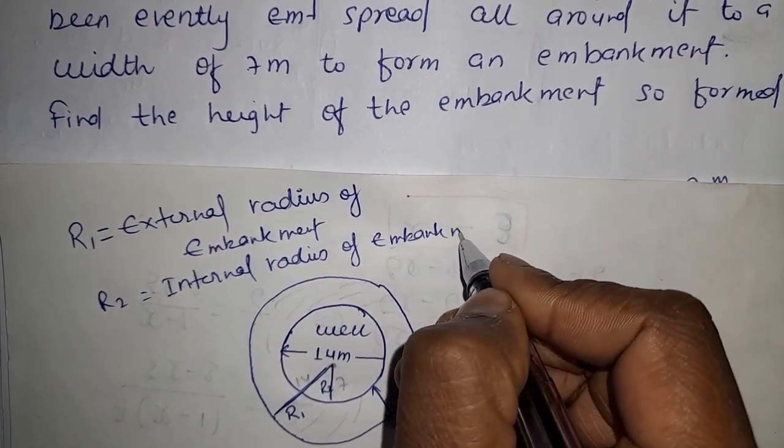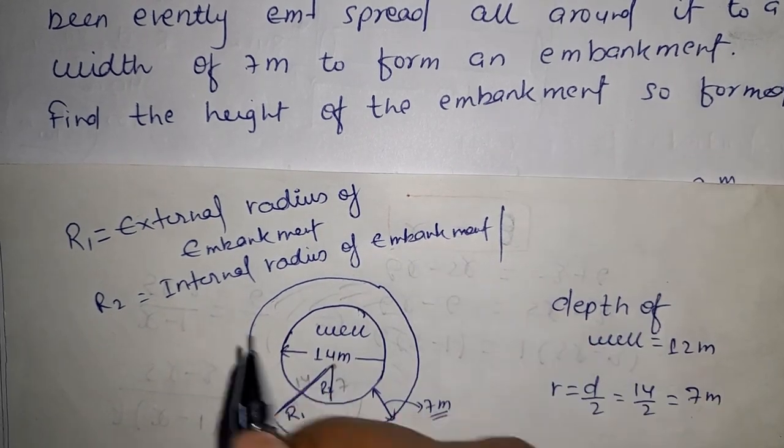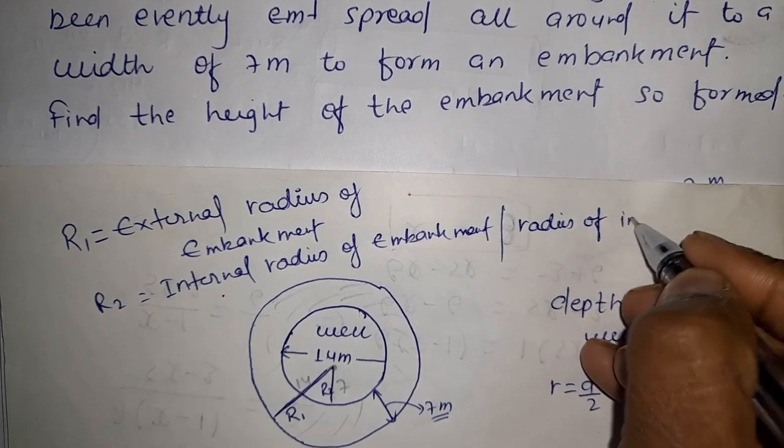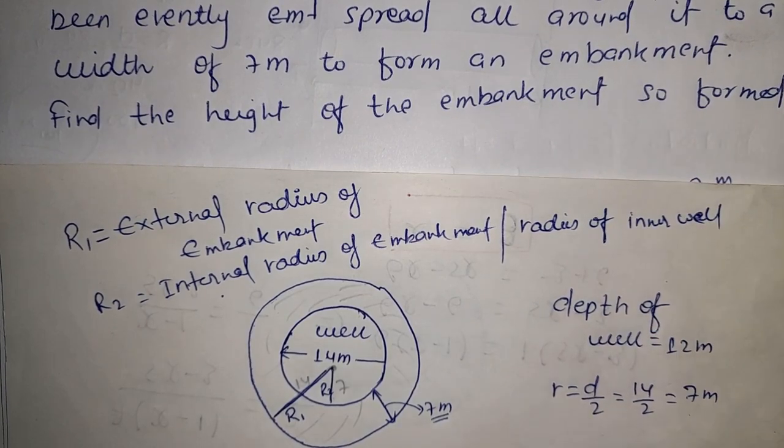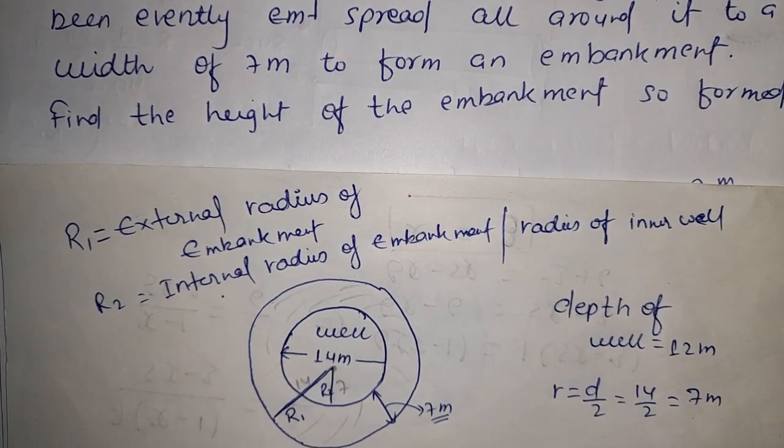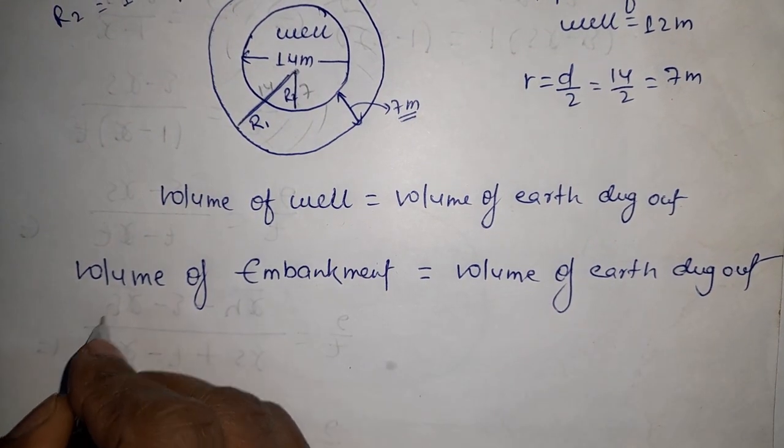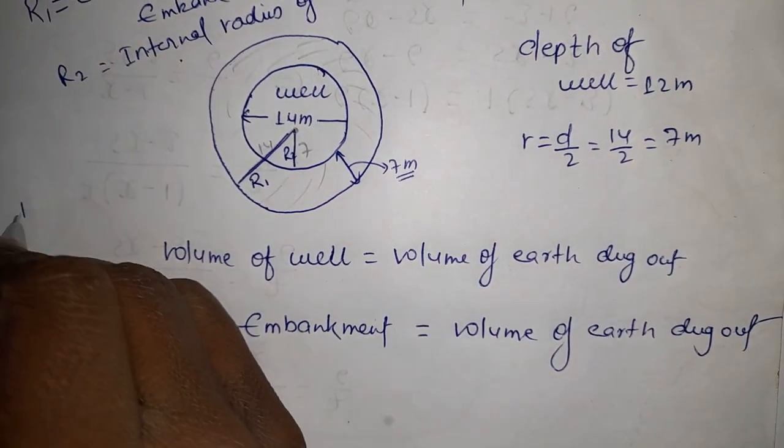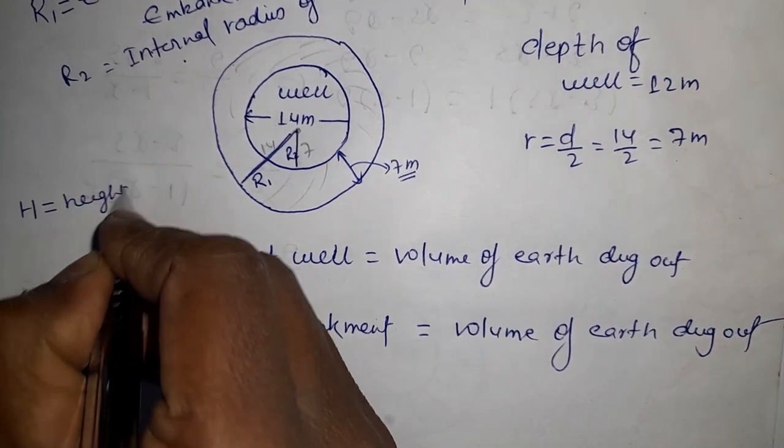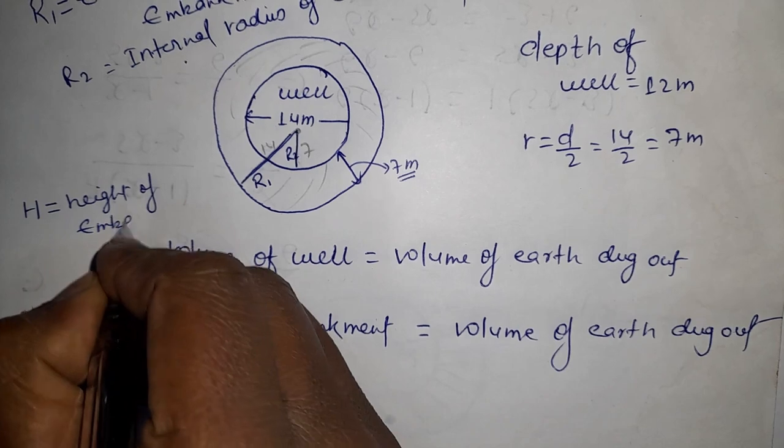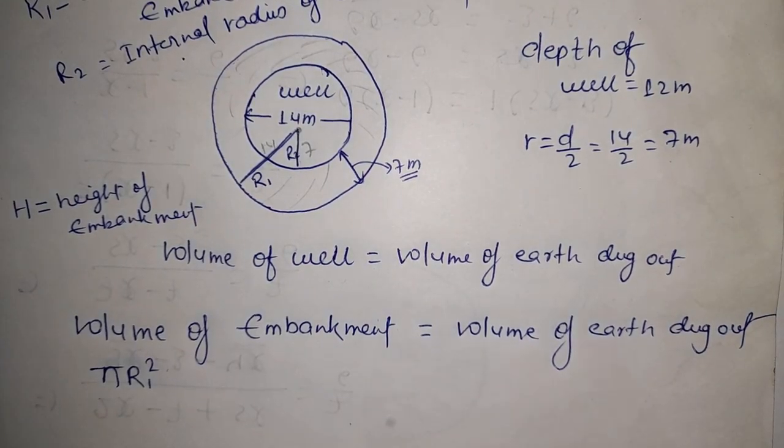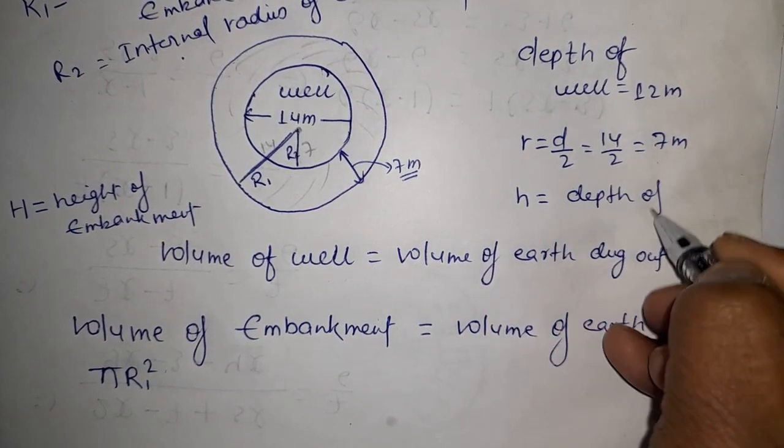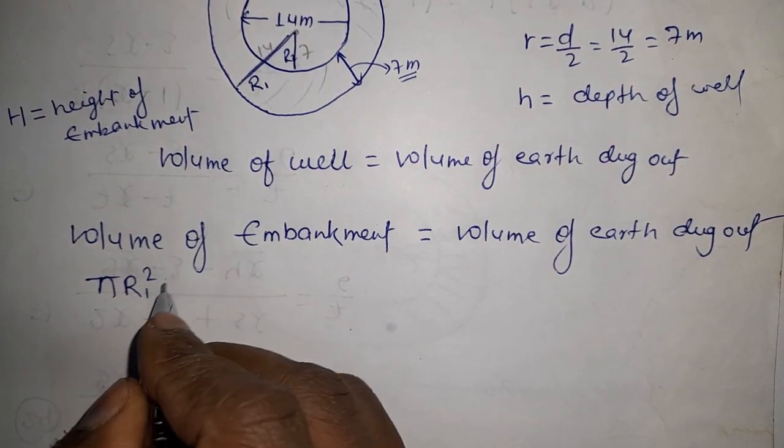So we'll take this radius as R1 and this as R2. This is the embankment's internal radius - radius of inner wall. So volume of embankment formula will be: pi R1 squared H, where capital H is the height of embankment, not the depth of well.